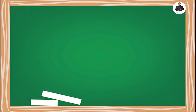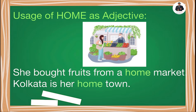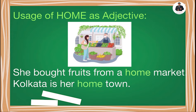Now I am showing you the usage of home as an adjective. Examples: 'She bought fruits from a home market.' 'Kolkata is her hometown.' In the first sentence, 'home' appears before the word 'market', which itself is a noun, and we know a noun is preceded by an adjective. The same applies in the second sentence, where 'home' is used before 'town'.